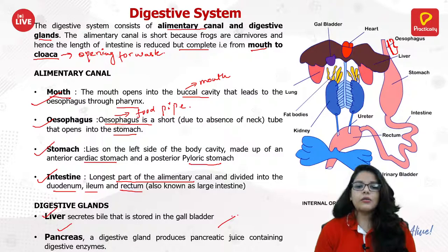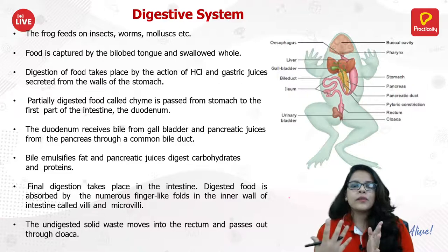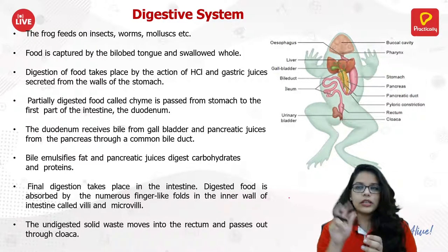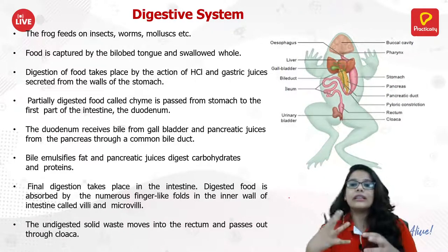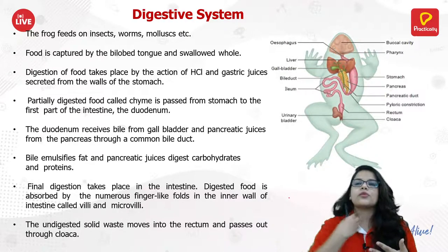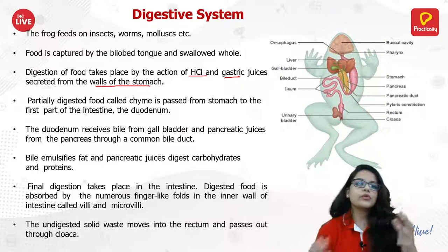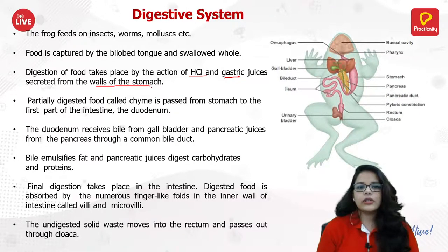The digestive glands include the liver, which secretes bile, and the pancreas, which produces digestive juices. When a frog catches an insect with its bilobed tongue, it swallows it whole. Digestion begins in the stomach where HCl and gastric juices secreted from the stomach walls partially process the food. This partially digested food is called chyme.